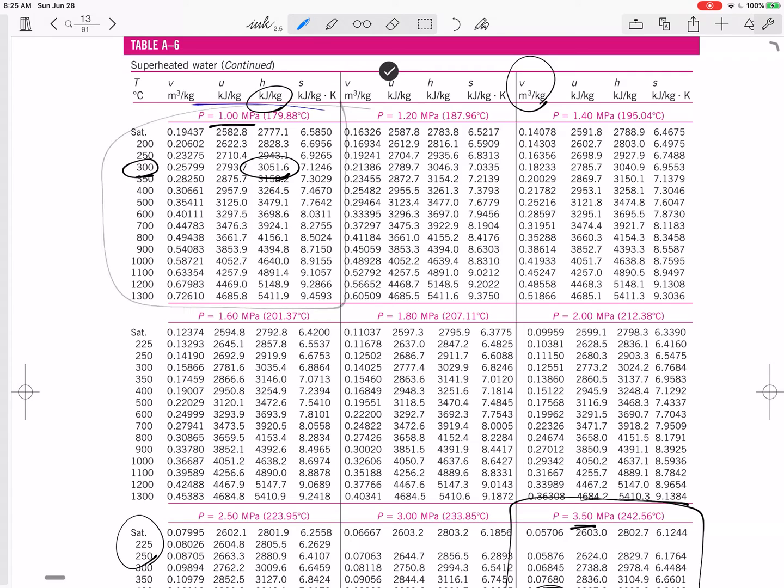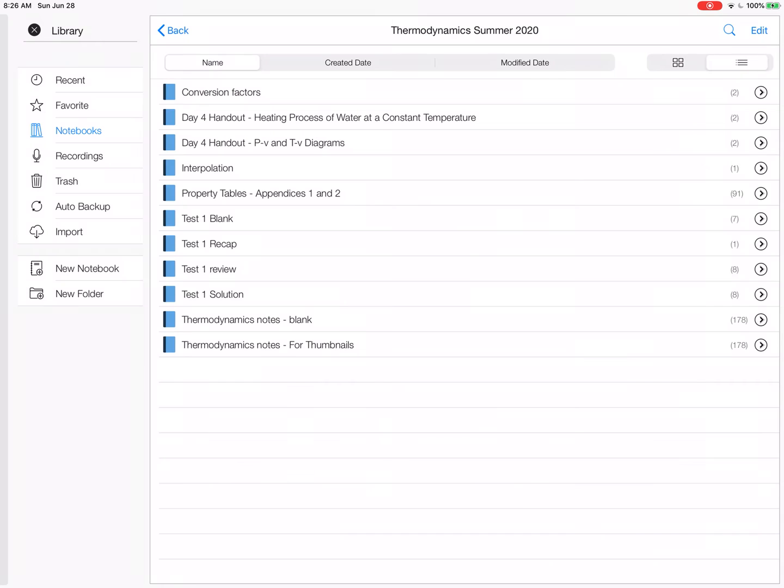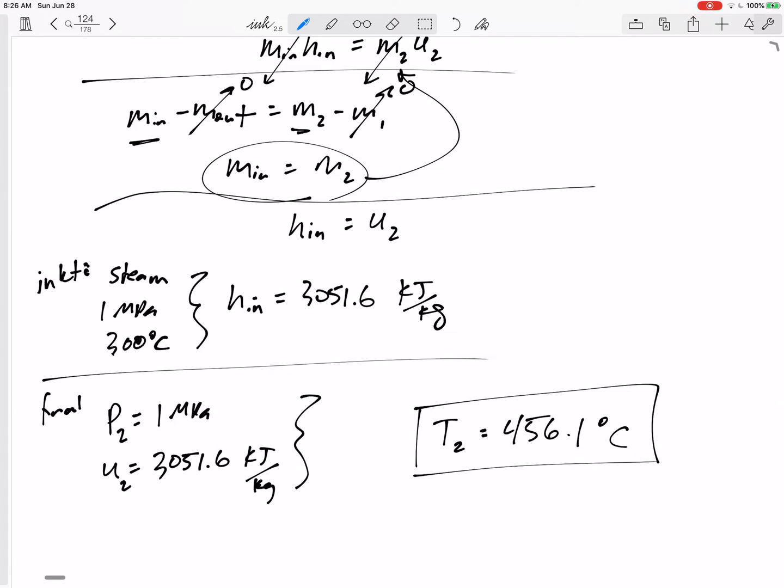So here I am at a pressure of 1 MPa and a U of 3051. Where would that be? Yeah, right in between here. So I'll need to interpolate between those two values, between 400 and 500. Interpolate. Yeah, because that's what I've got. Try that interpolation. I've got a temperature T2 of 456.1 degrees Celsius, 456.1 degrees Celsius.